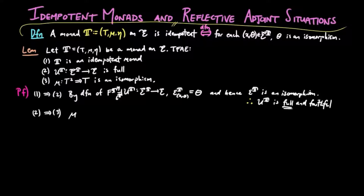For 2 implies 3: we have the multiplication for the monad mu is equal to ut εT ft. Then since functors preserve isomorphisms, mu is an isomorphism.